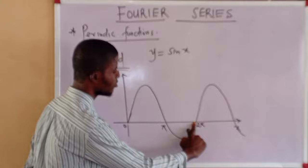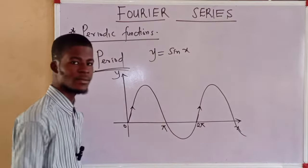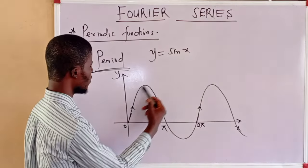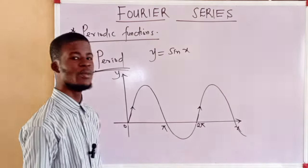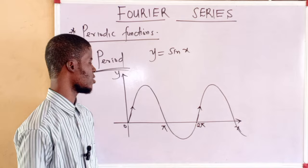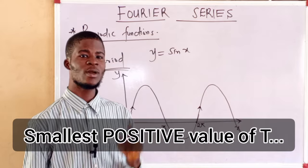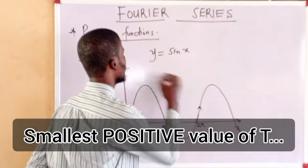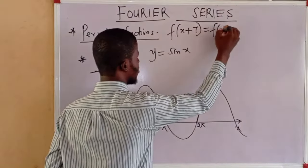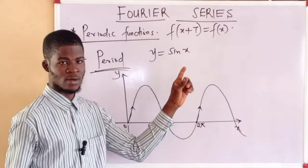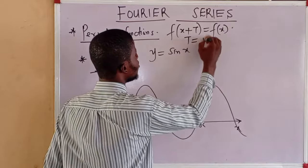At 2π, the same pattern starts again — the same format is seen. So we can see that when the waveform got to this point it started again. The period of sin(x) is actually 2π. The period of a function is the smallest value of T for which f(x + T) = f(x). T here is called the period of the function or the oscillation.